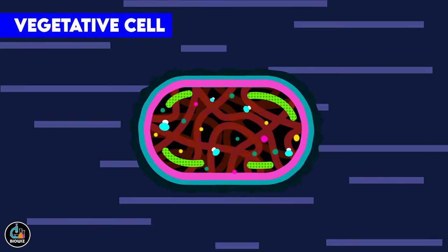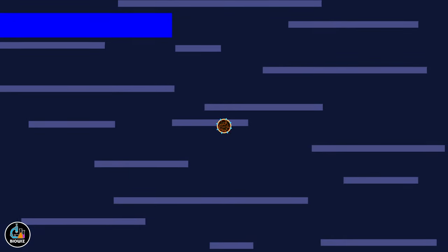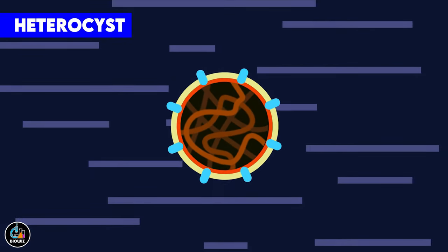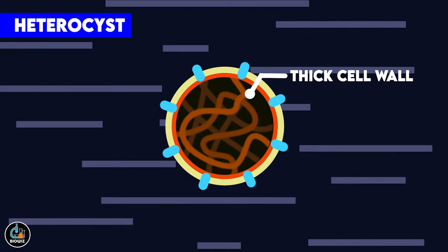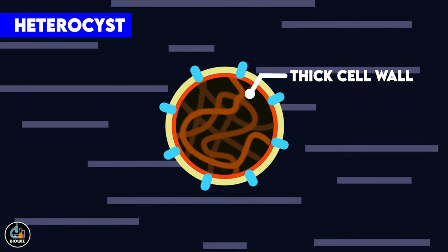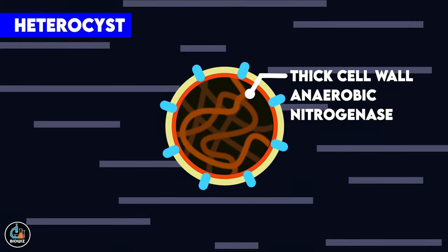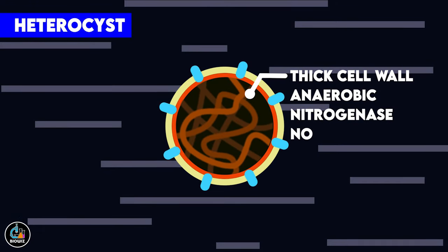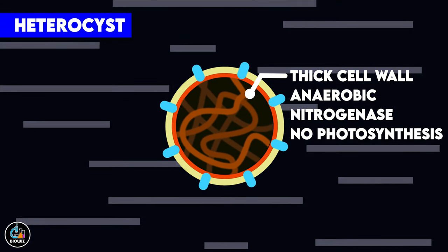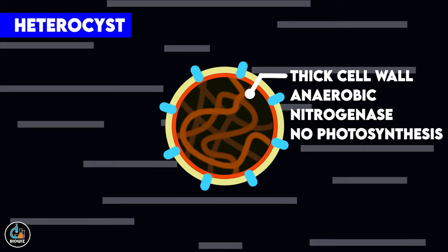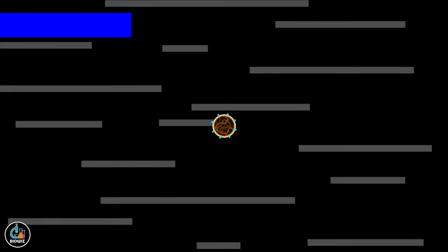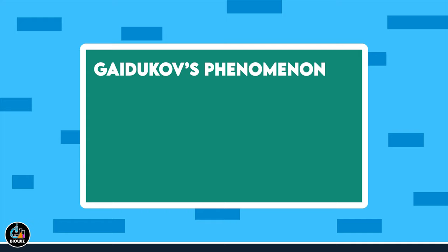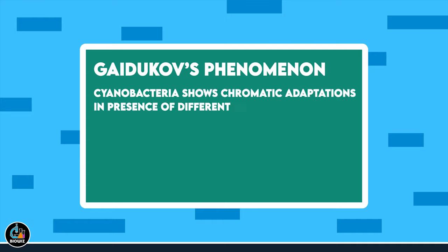The heterocysts are specialized cells where fixation of atmospheric nitrogen occurs, converting it into ammonia. Anaerobic conditions are created in these cells to carry out the nitrogen fixation process. Another interesting feature of cyanobacteria is the ability to show chromatic adaptation in the presence of different wavelengths of light.